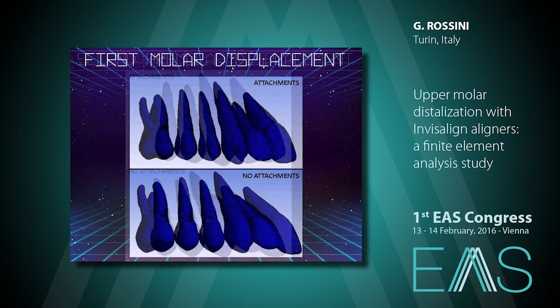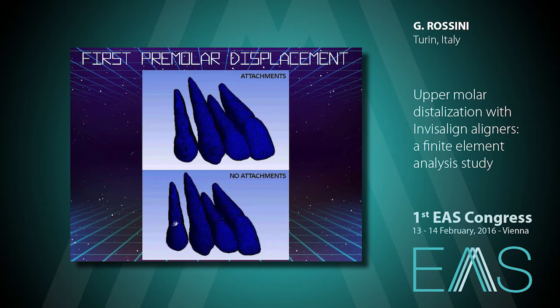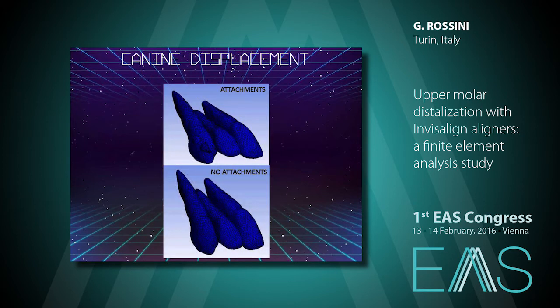For the second premolar, results are almost the same. For the first premolar, there are effects on incisors without attachments and on canines with attachments. For the canine, the load is on upper incisors in both configurations, but with more movement and anchorage loss when attachments are used.